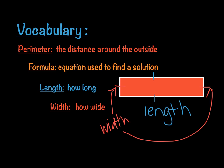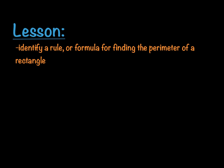That needs to be ingrained in your brain, because you're going to have to do some equations involving length and width. So just to review: perimeter is the distance around the outside. We're going to come up with a formula to find perimeter, and in order to find that formula, we have to understand what length and width are. In our lesson, we're going to identify a rule or formula for finding the perimeter of a rectangle.